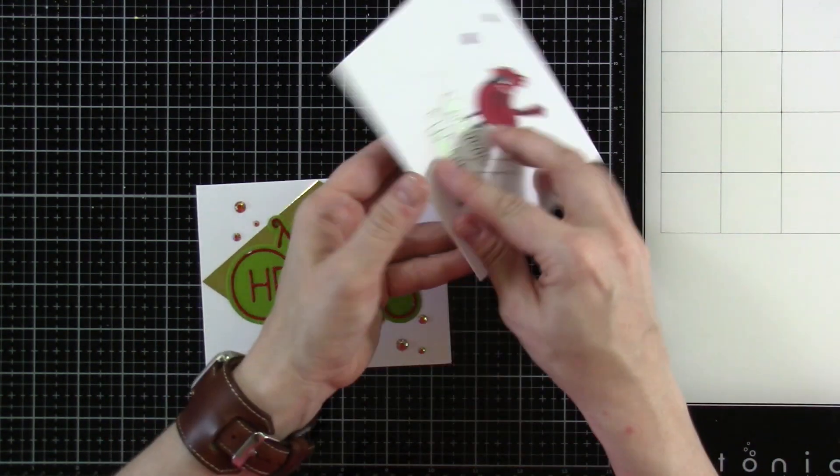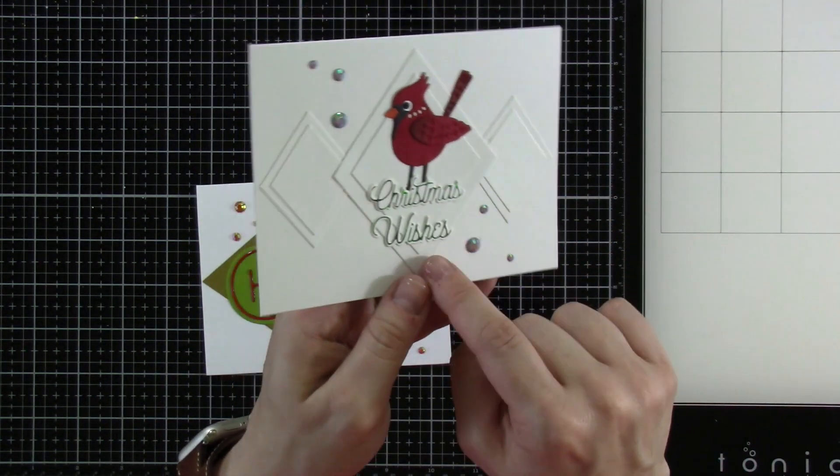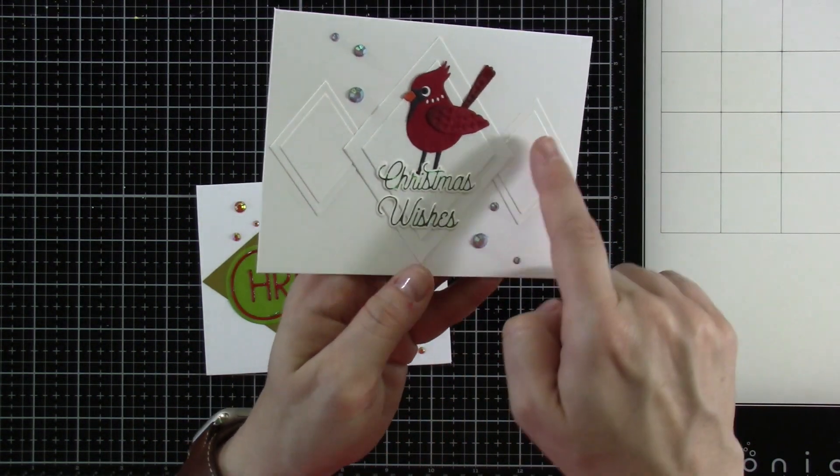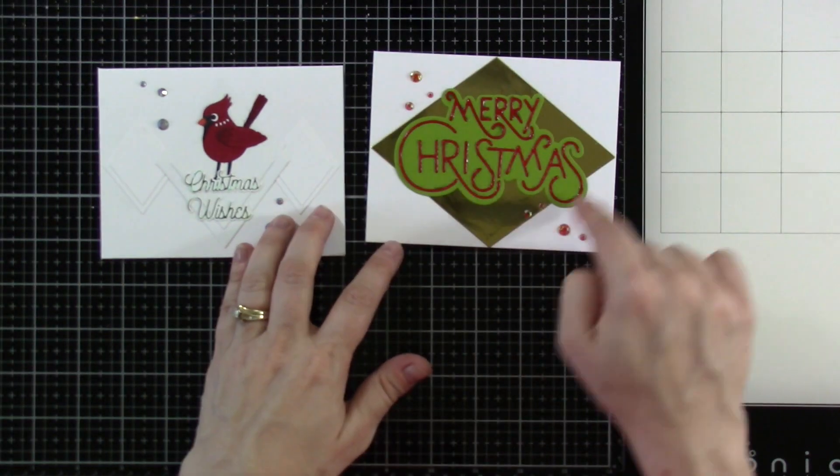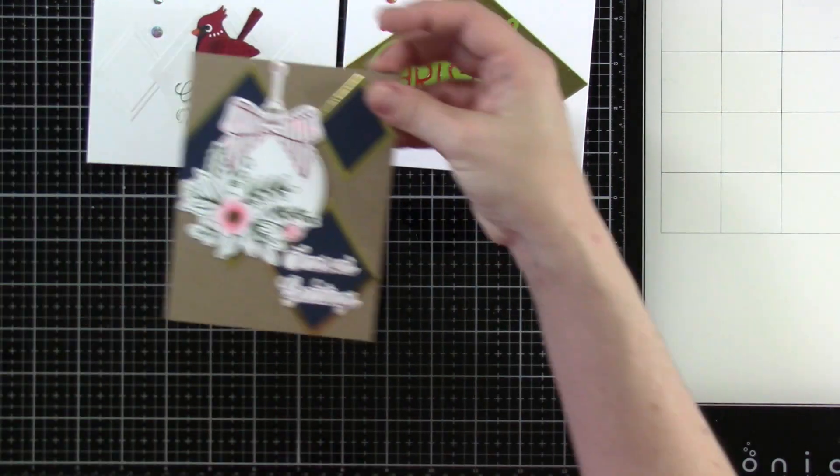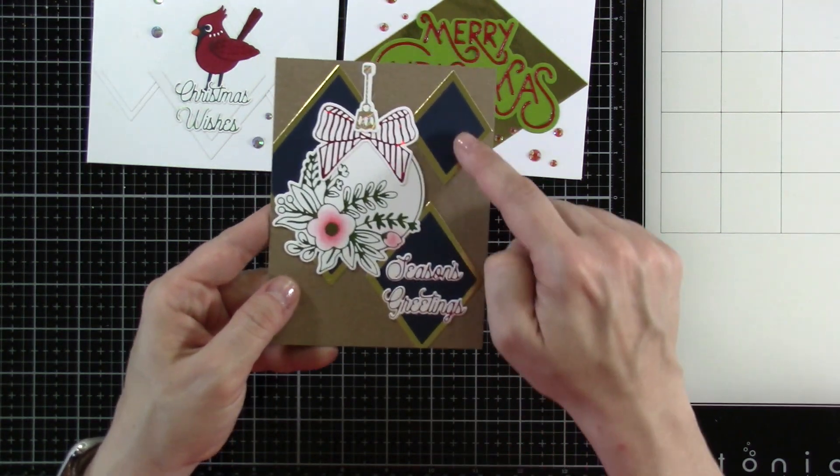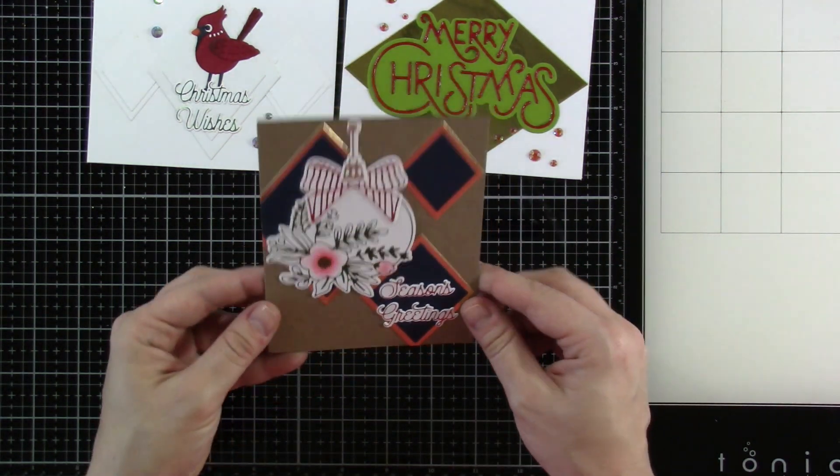I used it on these two. So you saw this one before. It is a bunch of Diamond die cuts. And I used it on this one. I also used it as a background for this one. And then I used it on this one. So here are some of the diamonds in the background as well.